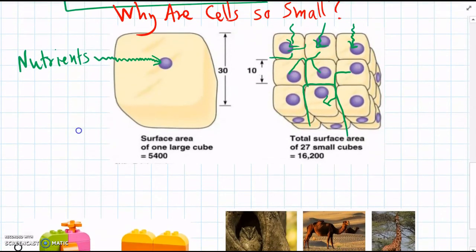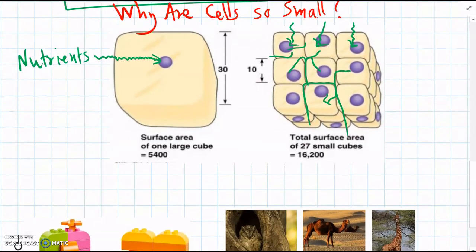So if we have small cells, it's a lot easier for nutrients to get in. And on the other hand, when wastes are coming out of the cell, it's exactly the same.